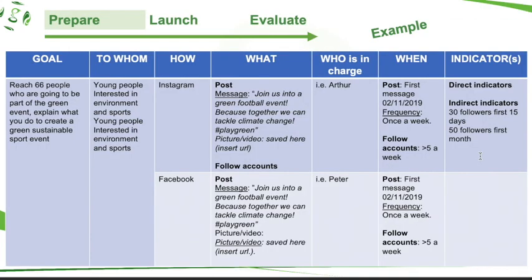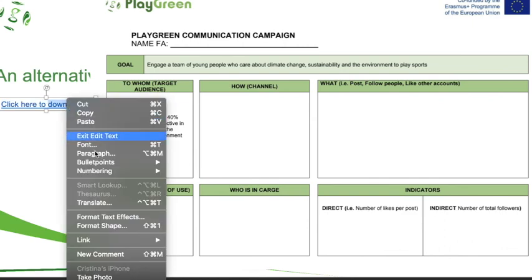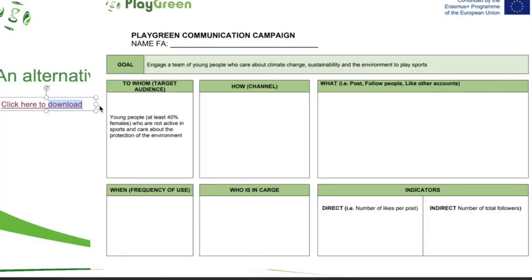An alternative way of doing it is a tool we have created — you can click here and open the link. You can download it, print it, and use it to define your goal, indicators, and target audience in your own time.